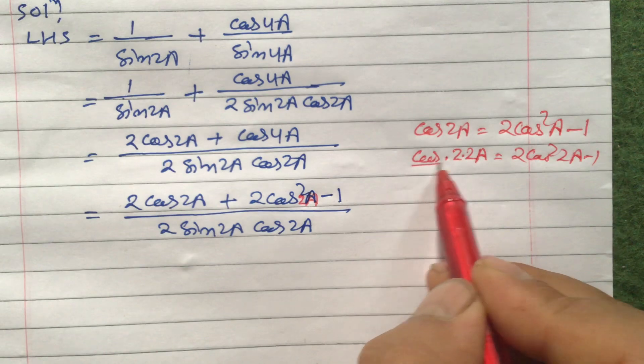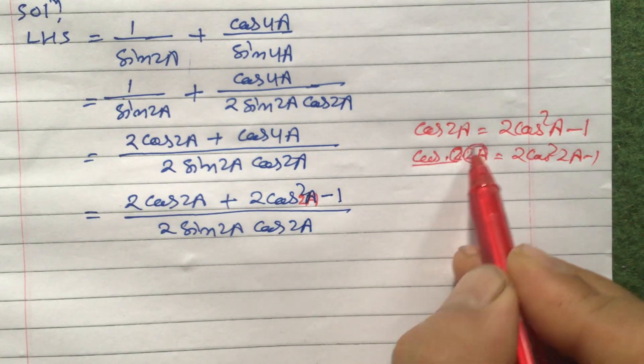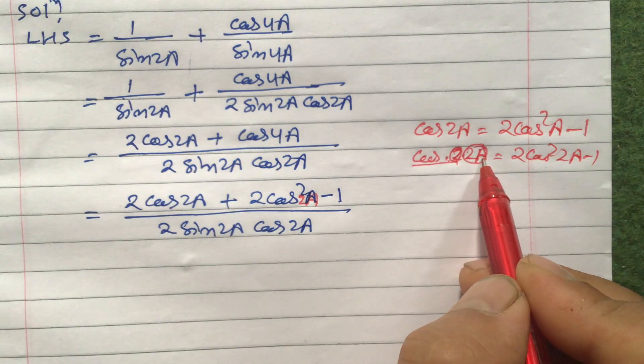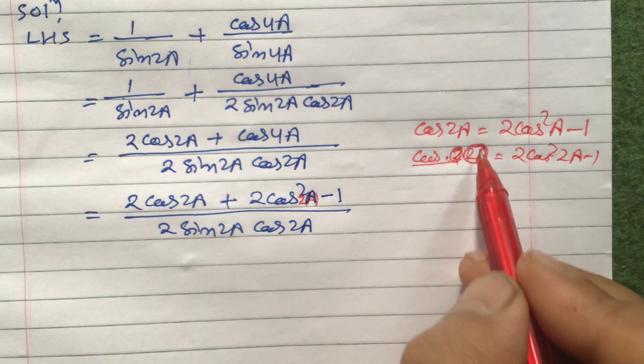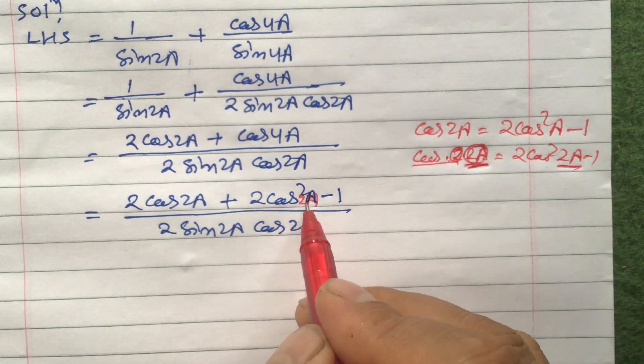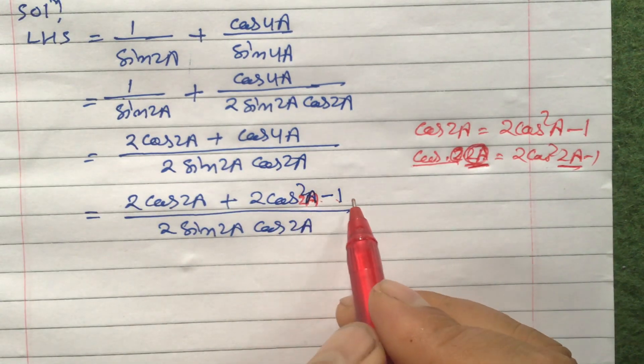Look at it. Cos 2a means 2a like this, cos 2 dot 2a. Understood? So theta means here 2a. So here also should be 2a: cos square 2a minus 1. Understood?